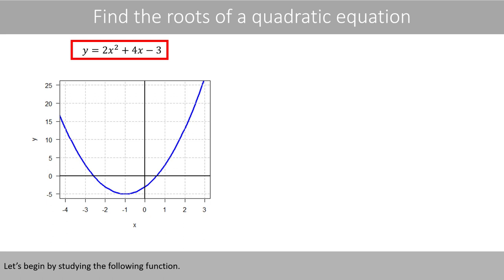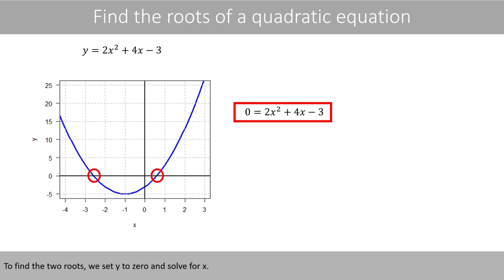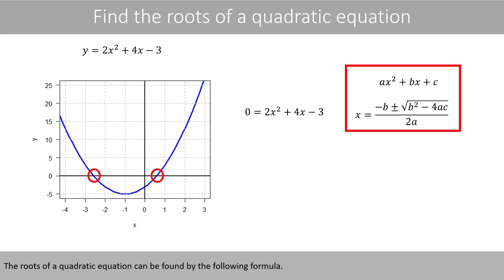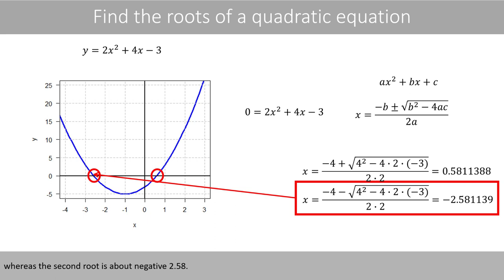Let's begin by studying the following function. This function has two roots, which means that the curve intercepts the x-axis at two points. To find the two roots, we set y to 0 and solve for x. The roots of a quadratic equation can be found by the quadratic formula. If we plug in the values and do the math, we see that the first root is about 0.58, whereas the second root is about negative 2.58. Let's place the roots here as a reference.